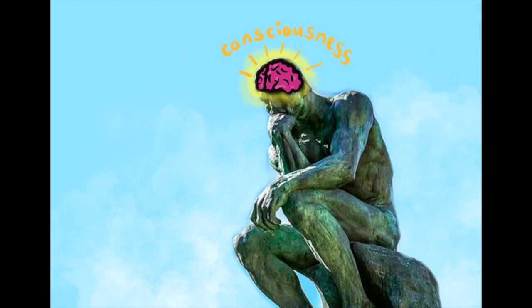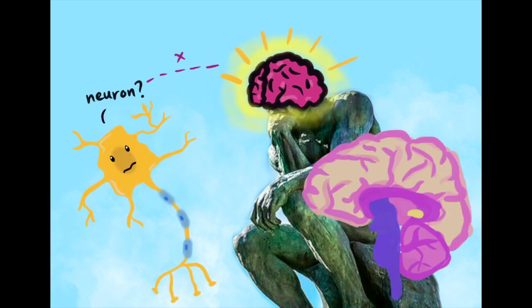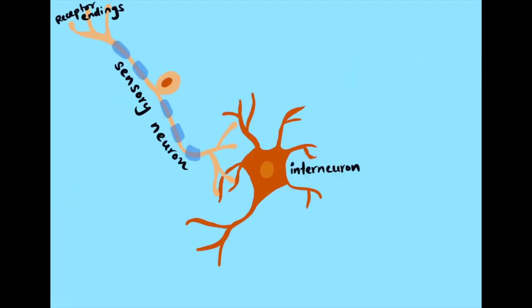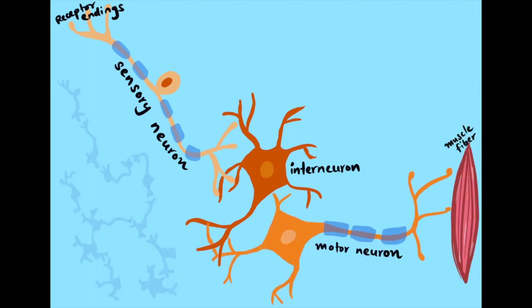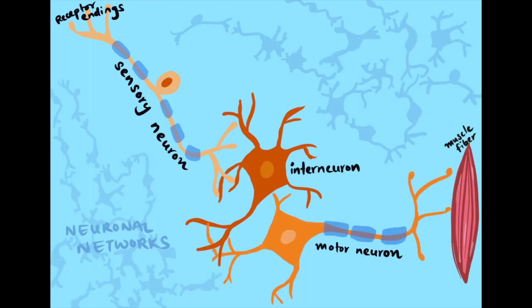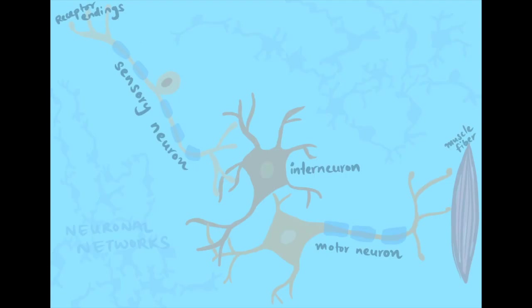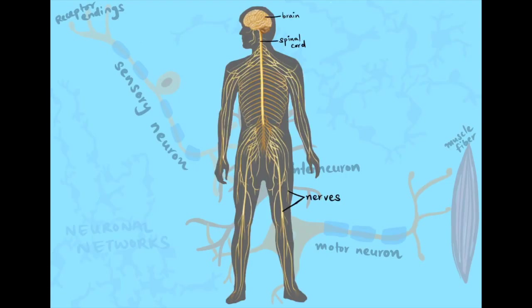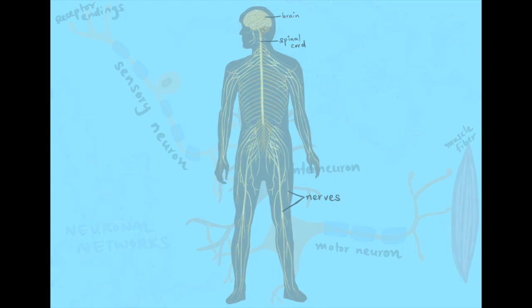Human consciousness is often deemed an emergent property of the brain. It's something that isn't held by a single neuron or brain region. Rather, it's the sum of everything, every neural connection, every motor and sensory signal, every part of our complex nervous system to give rise to our awareness of the self and the world around us.